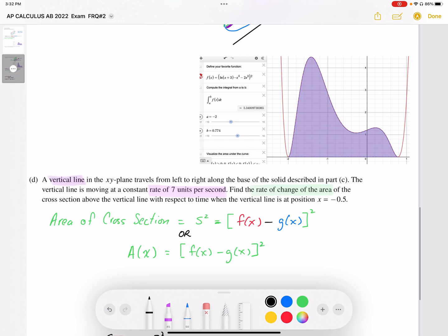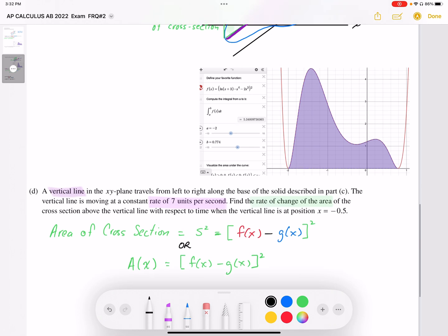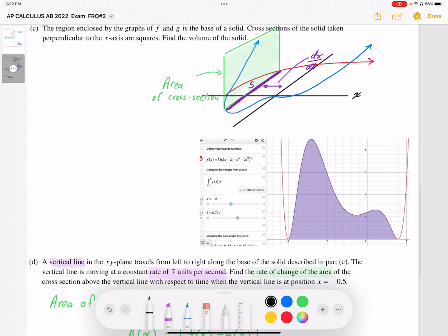And the question is asking, find the rate of change of the area of the cross-section above the vertical line. So we want to find how the area changes, and we want to find the rate at which it's changing when x is at negative 0.5.